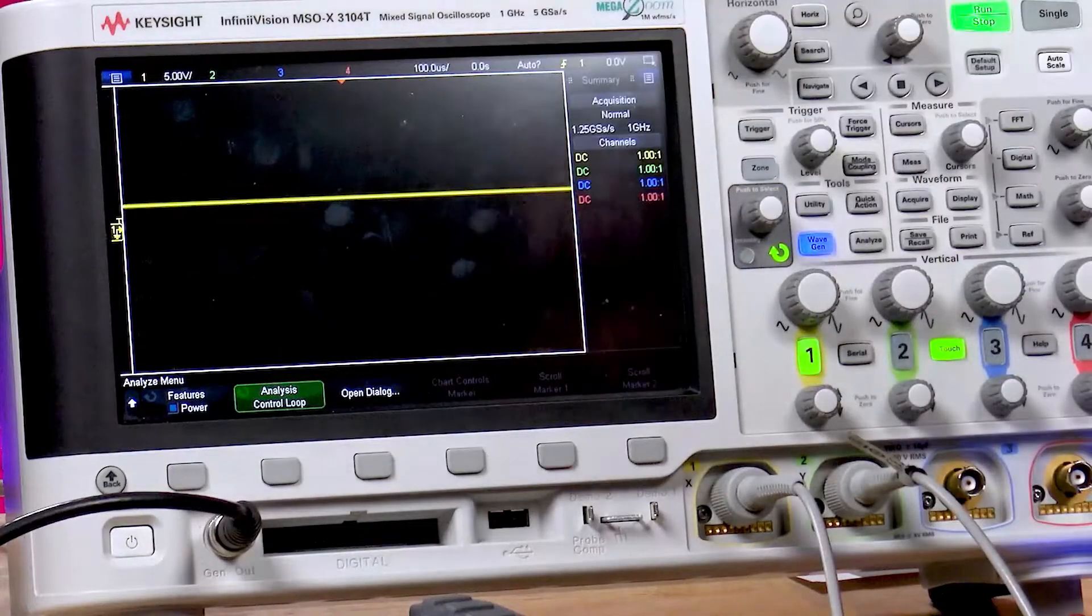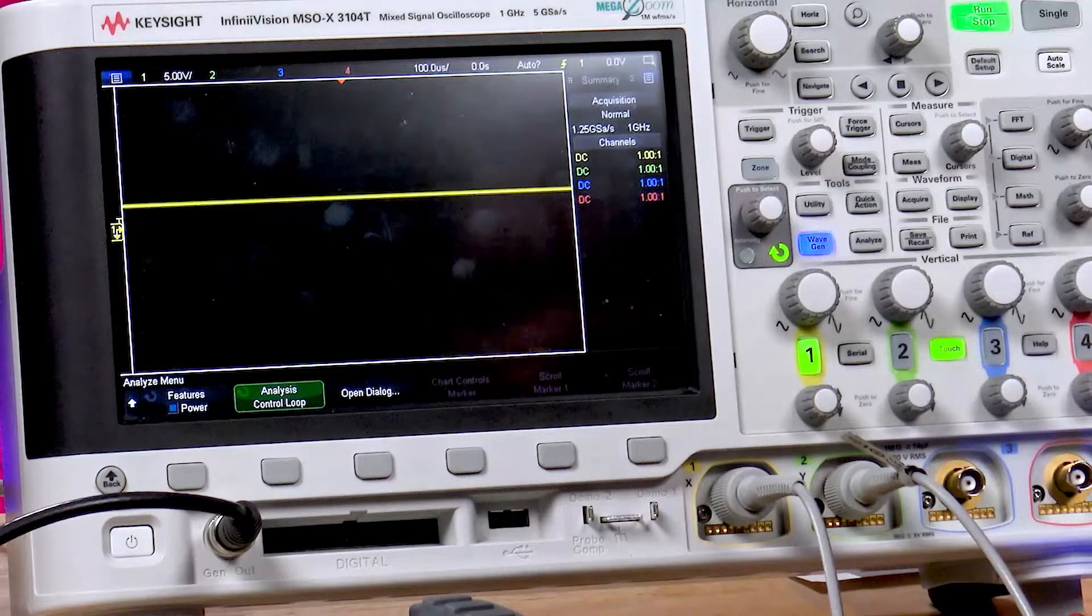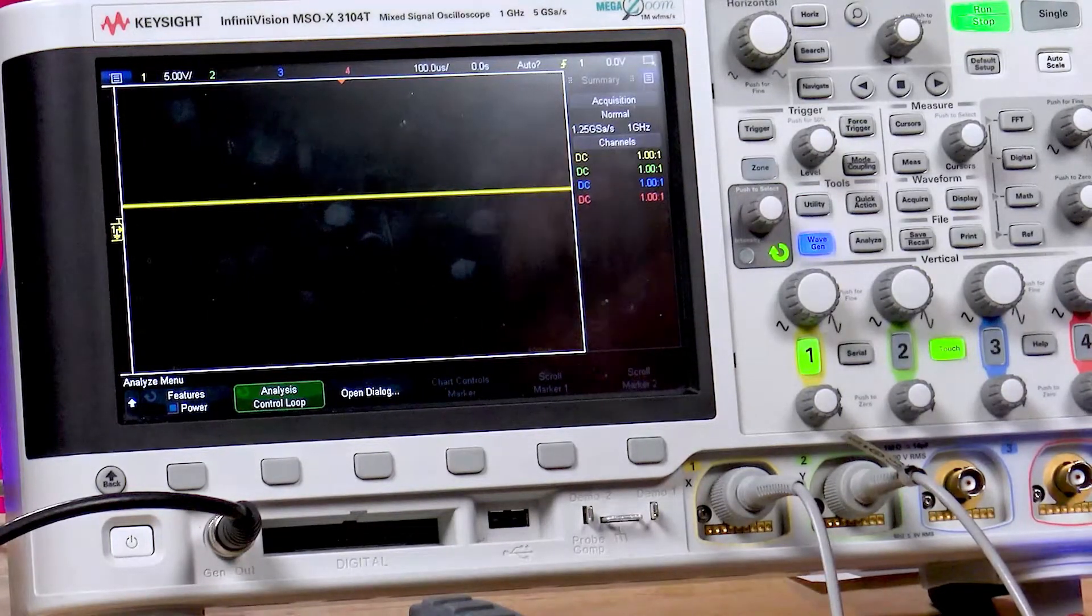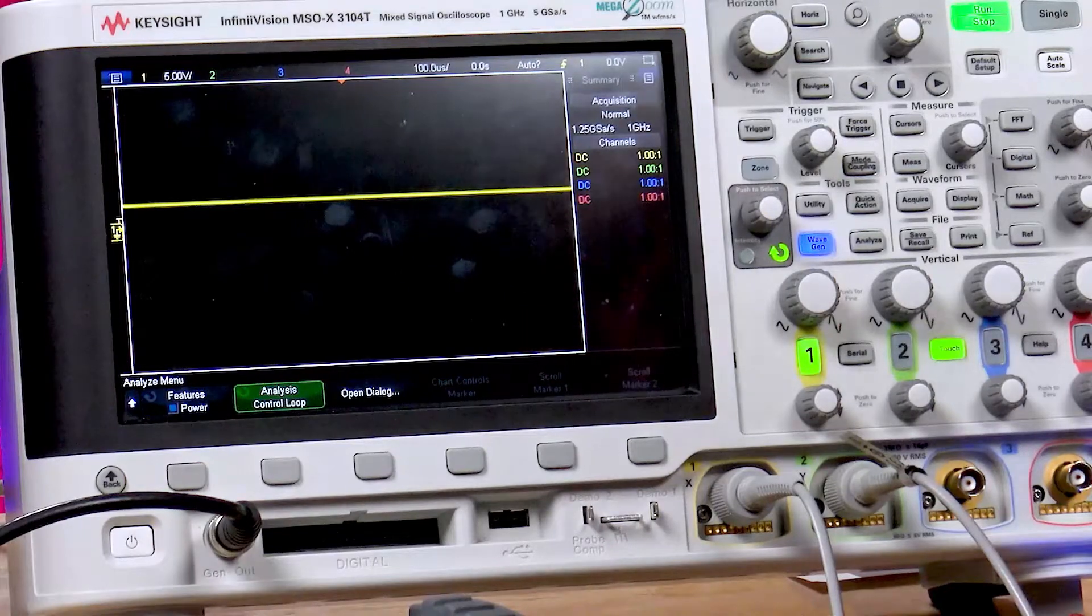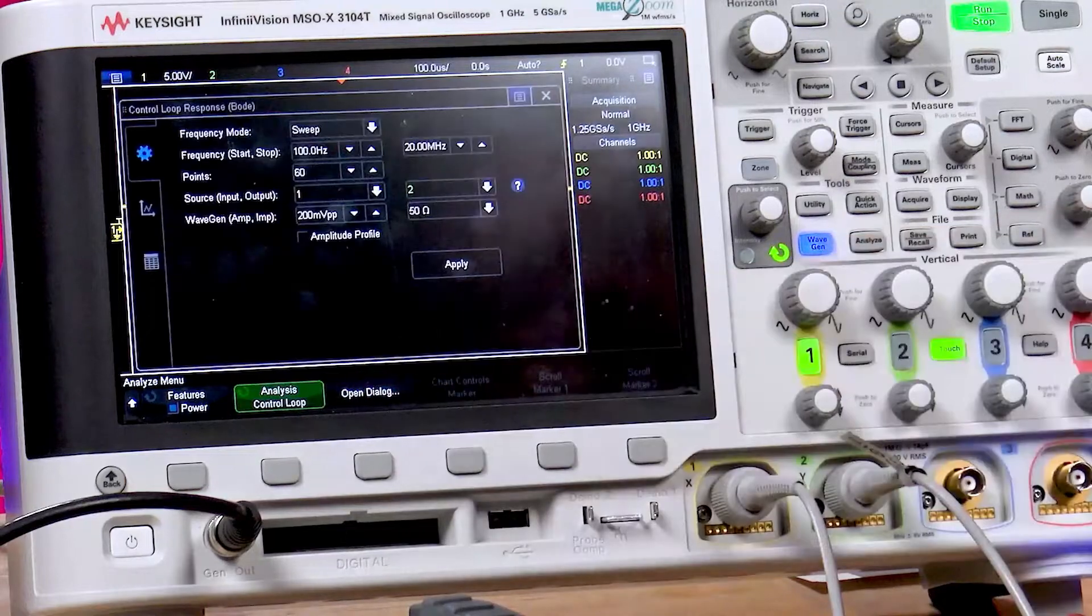This is an important measurement. It measures the stability of the feedback network in the power supply. You don't want your power supply oscillating, you want a nice clean output. And that's what a control loop response will tell you.